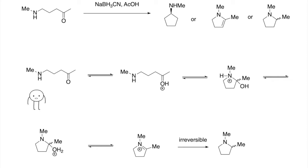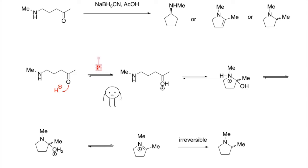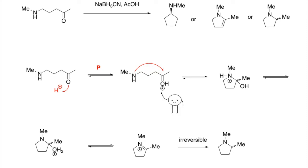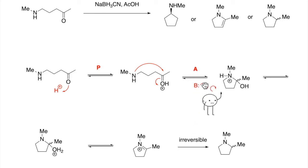The first step in a reductive amination mechanism is a protonation of the carbonyl oxygen. Next, there's an addition in which the lone pair of electrons on the nitrogen attacks the carbonyl carbon, causing electrons from the double bond to then swing up to the oxygen to neutralize its charge. In the third step, we have a deprotonation and a protonation, in which a base will deprotonate the amine group to neutralize its charge, and the oxygen group will be protonated by the acid.